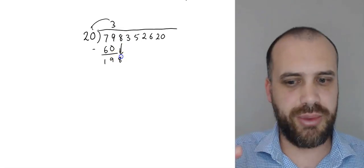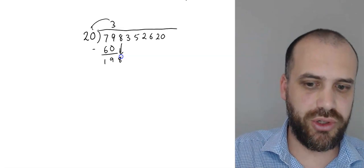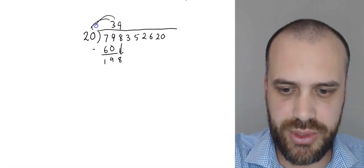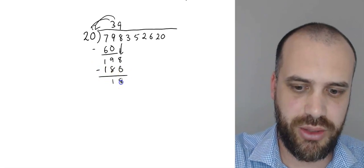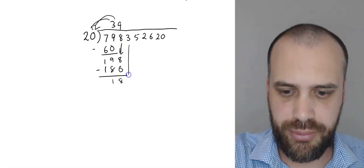198. How many times does 20 go into 198? Nine times. Nine times 20 is 180. Subtract one from the other. We get 18. Bring the next one down.